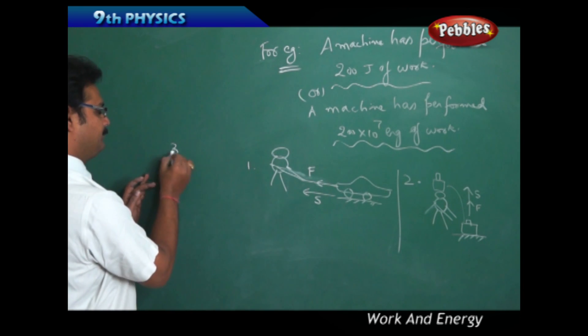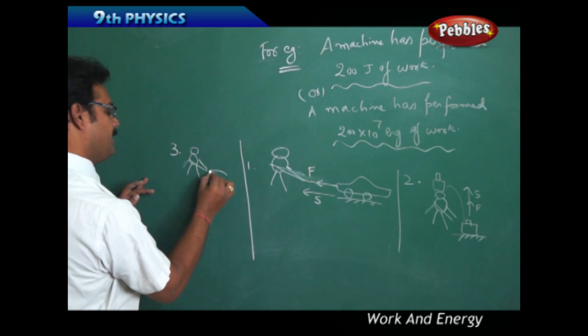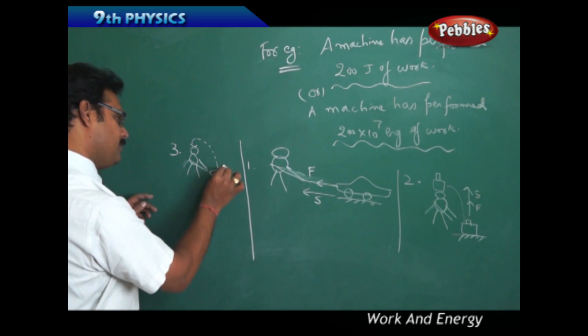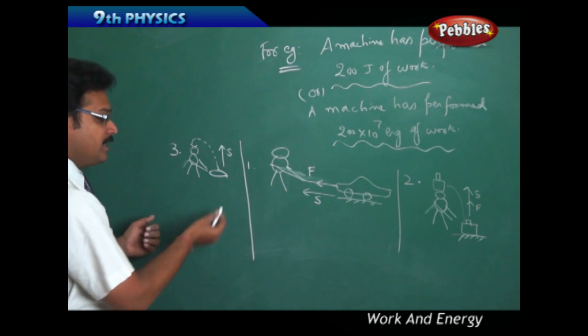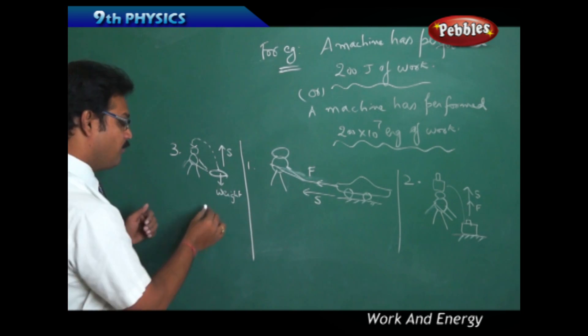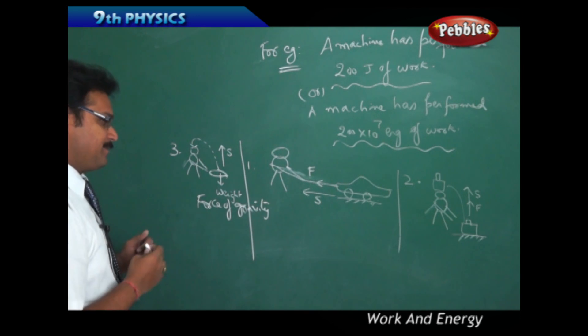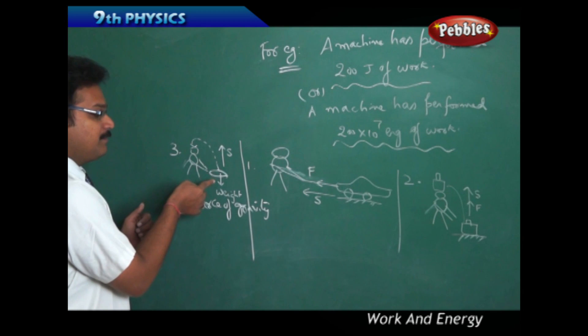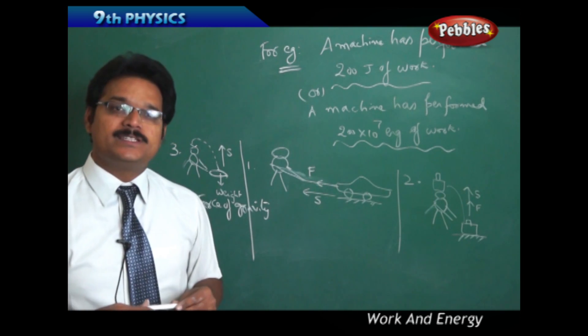The person again lifting a cement bag. So cement bag he lifted and keeps it on his head. And here the displacement is in the upward direction again. And you see, when you want to lift the cement bag in the upward direction, cement bag has weight acting downwards. This weight is also called force of gravity by the earth. Now I can say that there is a work done by the person against the force of gravity to lift the cement bag in the upward direction. This is also work. So like that, whenever force and displacement are in the same direction, we can say work is done.